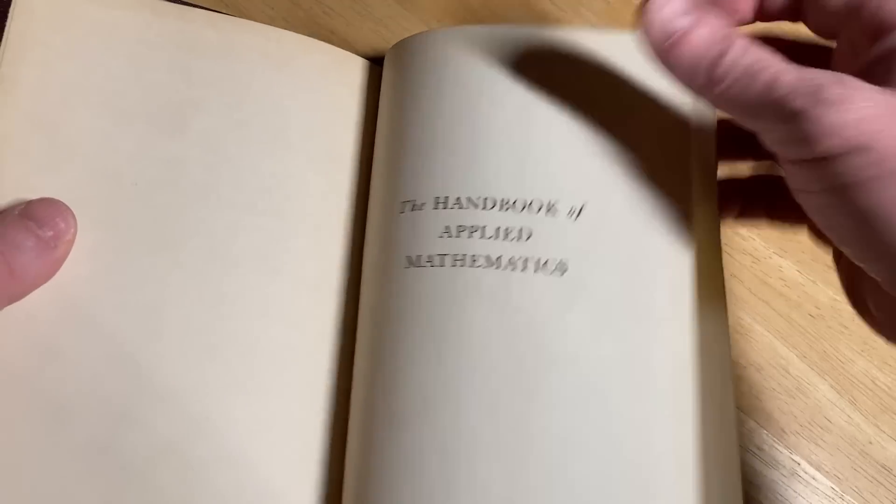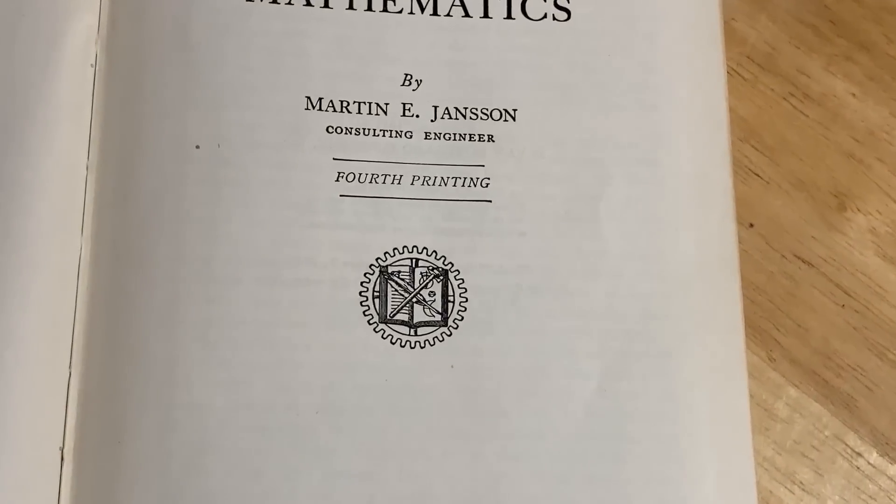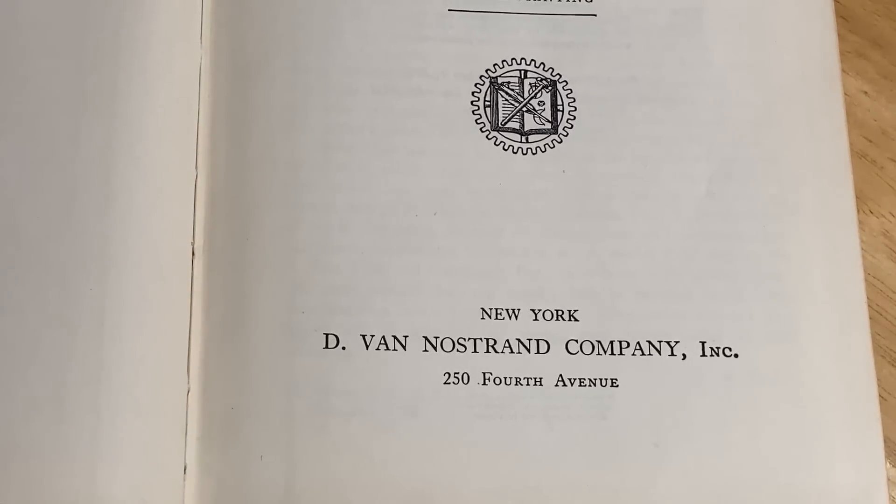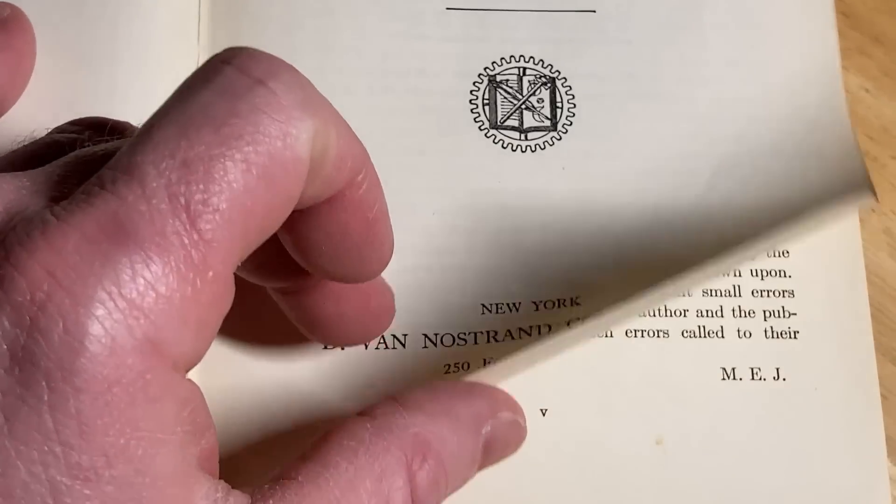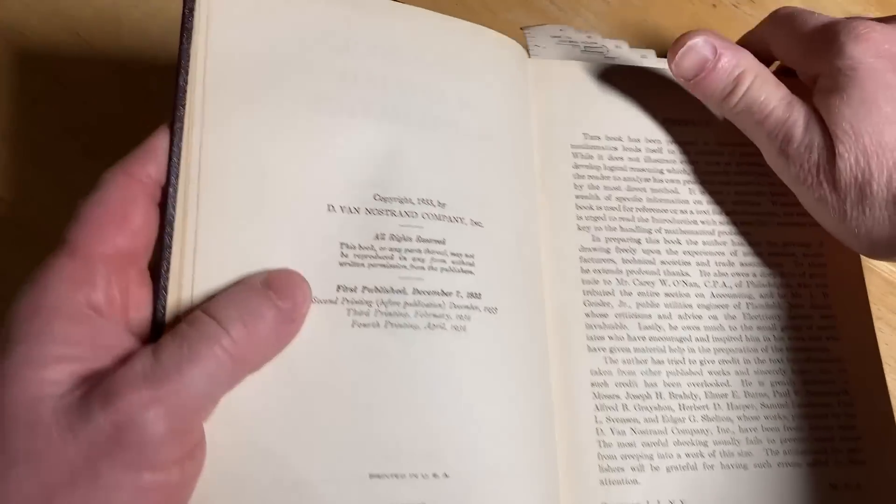The Handbook of Applied Mathematics. But the book itself is in English. And here's the author, Martin E. Janssen, Consulting Engineer, 4th Printing, D. Van Nostrand Company, Inc., New York, 4th Avenue. Yeah, it's a very popular publishing company. I don't know if it still exists. Probably not. By the way, the cover, even though it's a hardcover, it feels a little soft. It's a little weird.